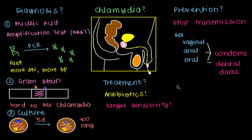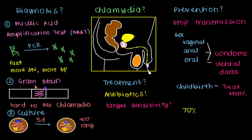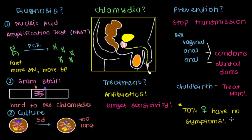The last way chlamydia can be transmitted is from an infected mother to her newborn child during childbirth. The way we prevent this is simply by treating mom. This is why all pregnant women in the United States are screened for chlamydia and gonorrhea on one of their first doctor's visits. The main reason behind this is that 70% of infected women have no symptoms, meaning a pregnant woman can pass the infectious disease onto her baby without even knowing she had it. That's why it's really important to be checked and treated early on.